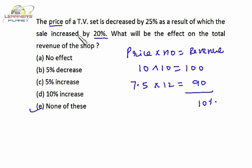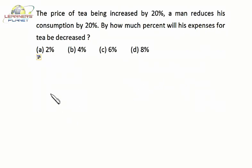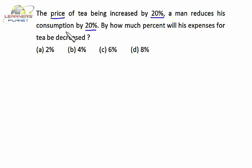Just identify the variables, identify the formula for calculating the revenue, take the base value 10 and calculate — it's as simple as that. Now, the price of tea is being increased by 20 percent and a man reduces his consumption by 20 percent.